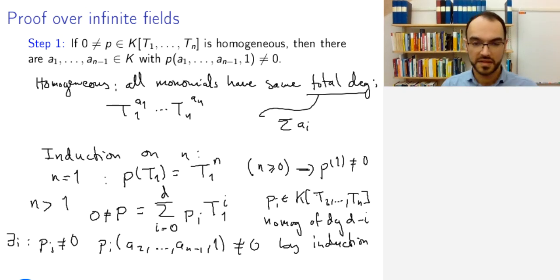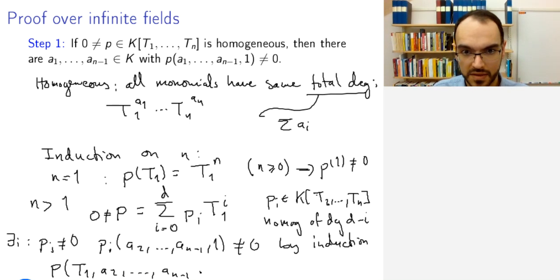And note that these are multiples of different powers of T1s. So they cannot cancel each other, these Pi in this polynomial. And then therefore, if this is true, then you can look at the polynomial P of T1 and then a2 to an-1, 1. This is a polynomial in T1.